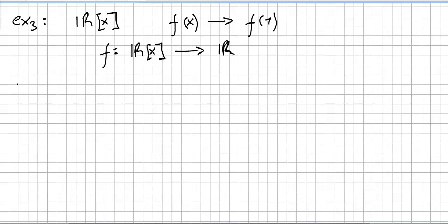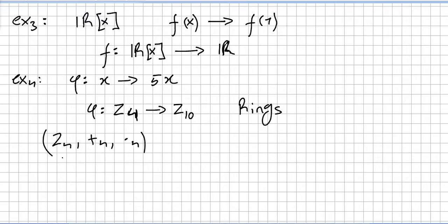Let me give you now another example, and this can be example 4. Let us take this mapping phi from x to 5x. So phi is taking elements from Z_4 to Z_10. Please do not forget that we are talking about rings here. This is Z_4 under addition modulo 4 and multiplication modulo 4 taken into Z_10 addition modulo 10, multiplication modulo 10.